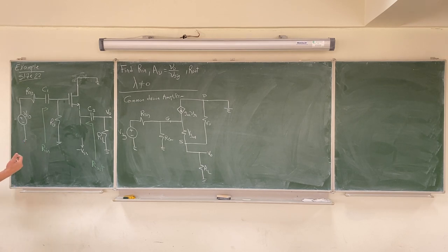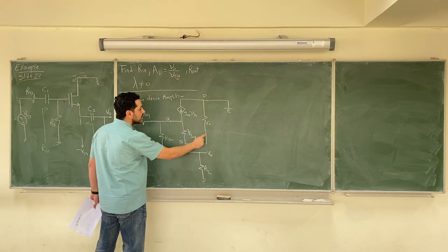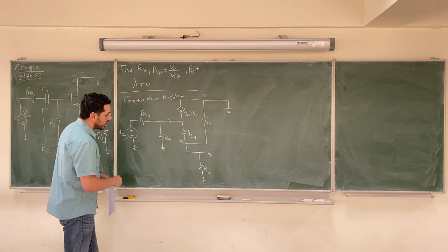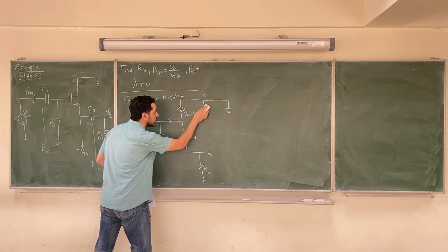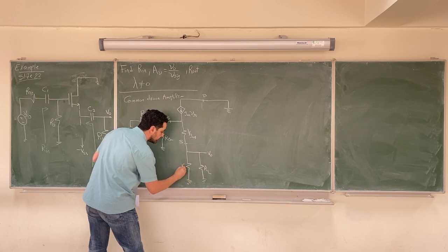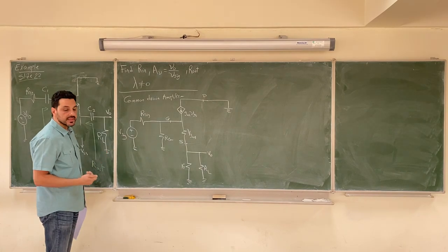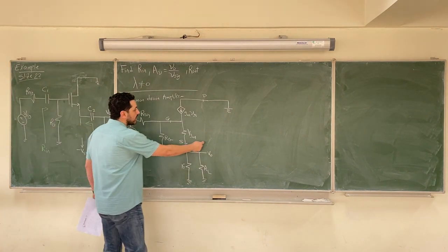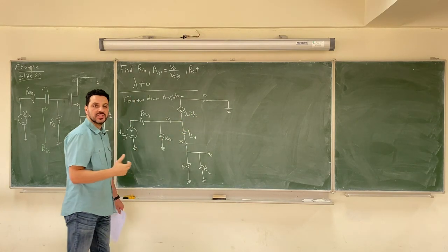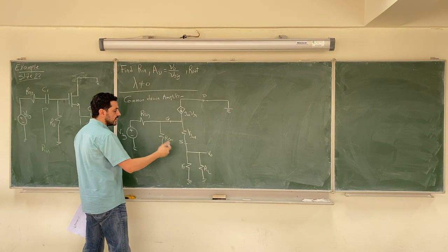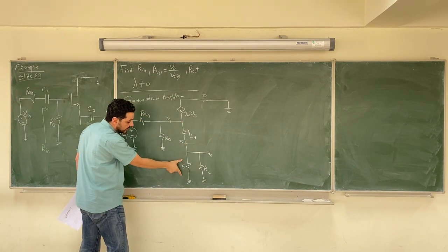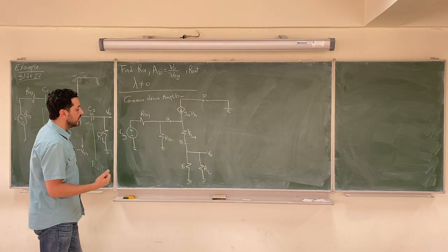We can simplify this circuit by noticing that RO is connected between the source and the ground. We can just remove it from its current position and redraw it between the source and the ground in a simpler way. The circuit is now easier to analyze because the previous delta shape with RO connected across the transistor was difficult to work with. RO is still between source and ground — we just draw it differently to simplify the analysis.